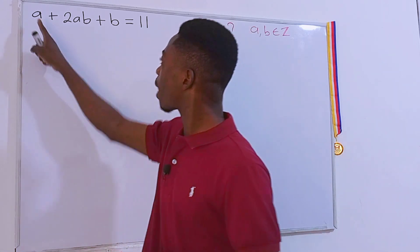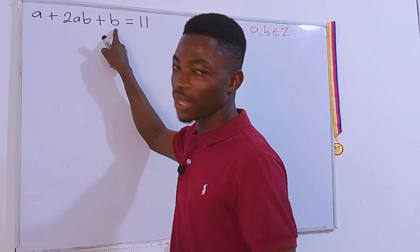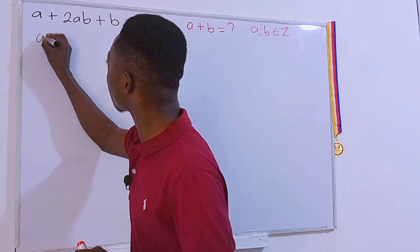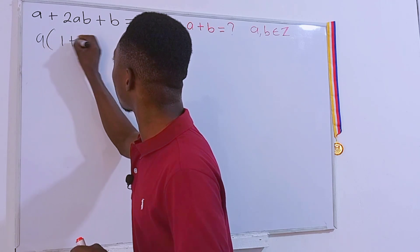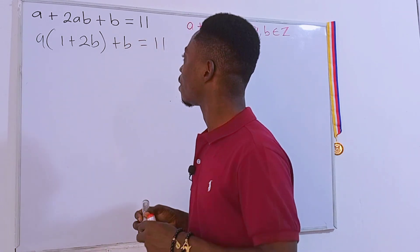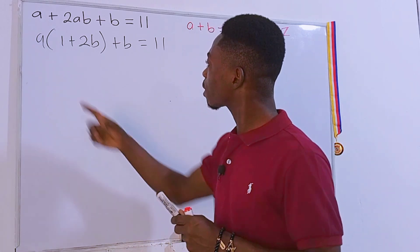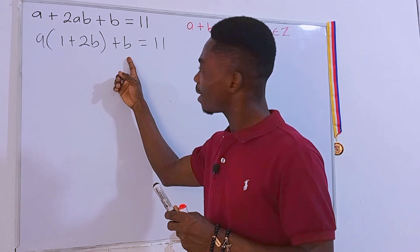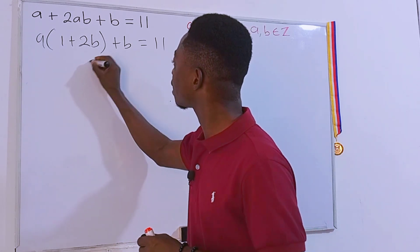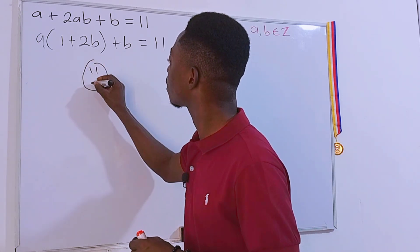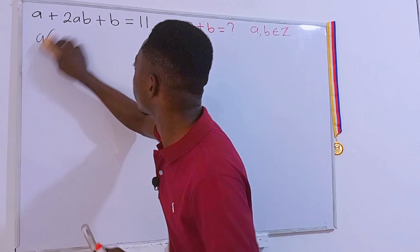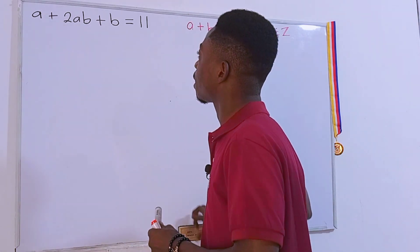In fact, we have a here, a here, b here, b here. We can choose to factor any of them out. If we factor out a, we will have a times (1 + 2b) + b = 11. Now check this out, what else can we do to this equation right here? In fact, we don't have much option when we factor out a just like that. So what I will do is I'm just gonna put this—okay, this idea is not gonna help, so I'm gonna get rid of it.